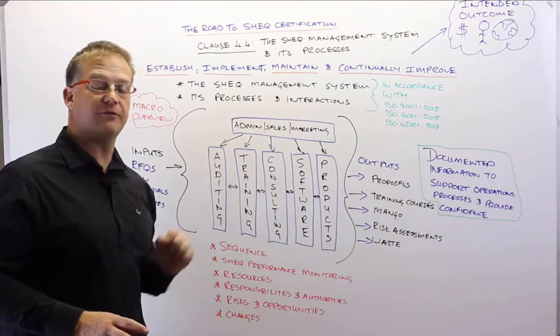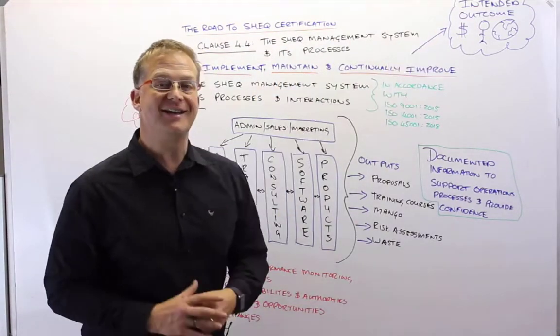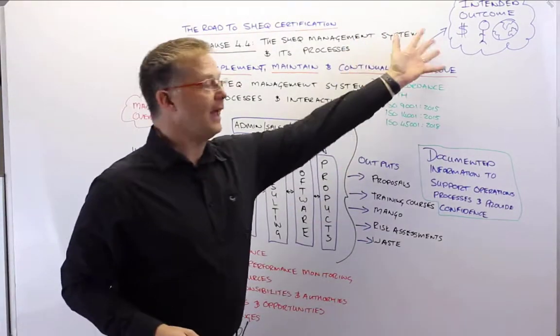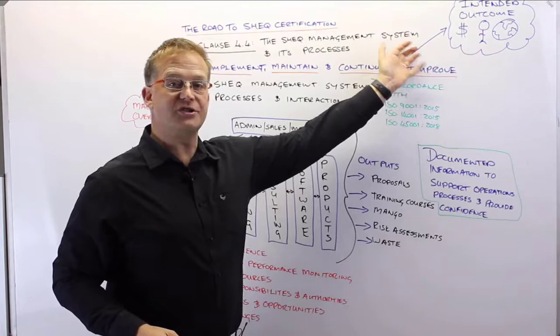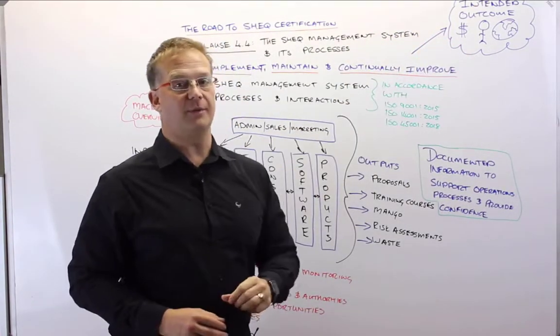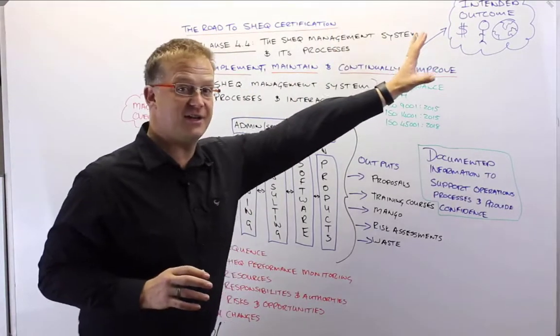And this is all, remember from the first video tutorials that we did, all to achieve the intended outcome of the check management system, which is basically a strong profitable organization that meets its customer requirements, prevents injury and ill health, prevents pollution and environmental degradation. So those will be some of the primary emphasis for the intended outcome.